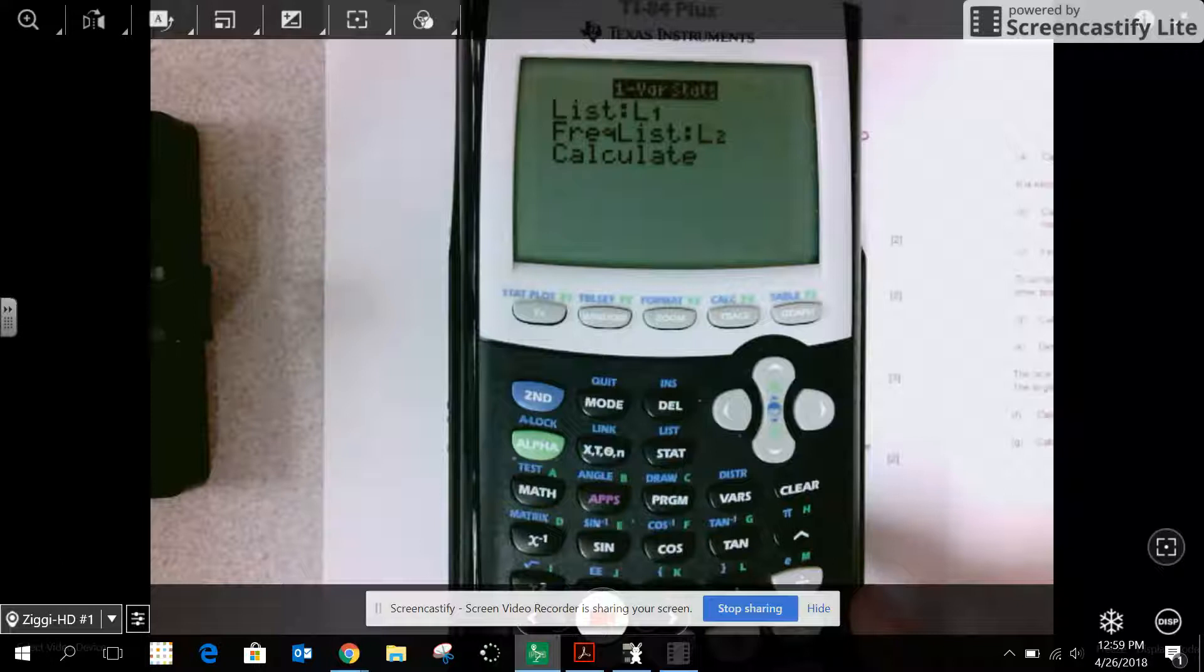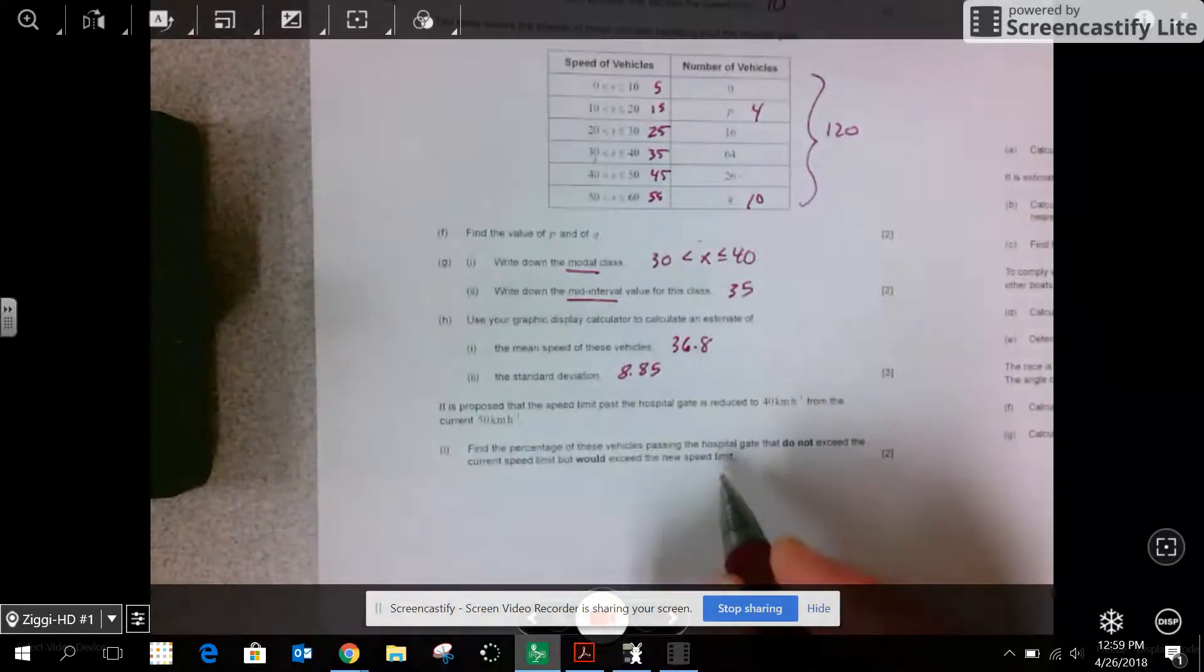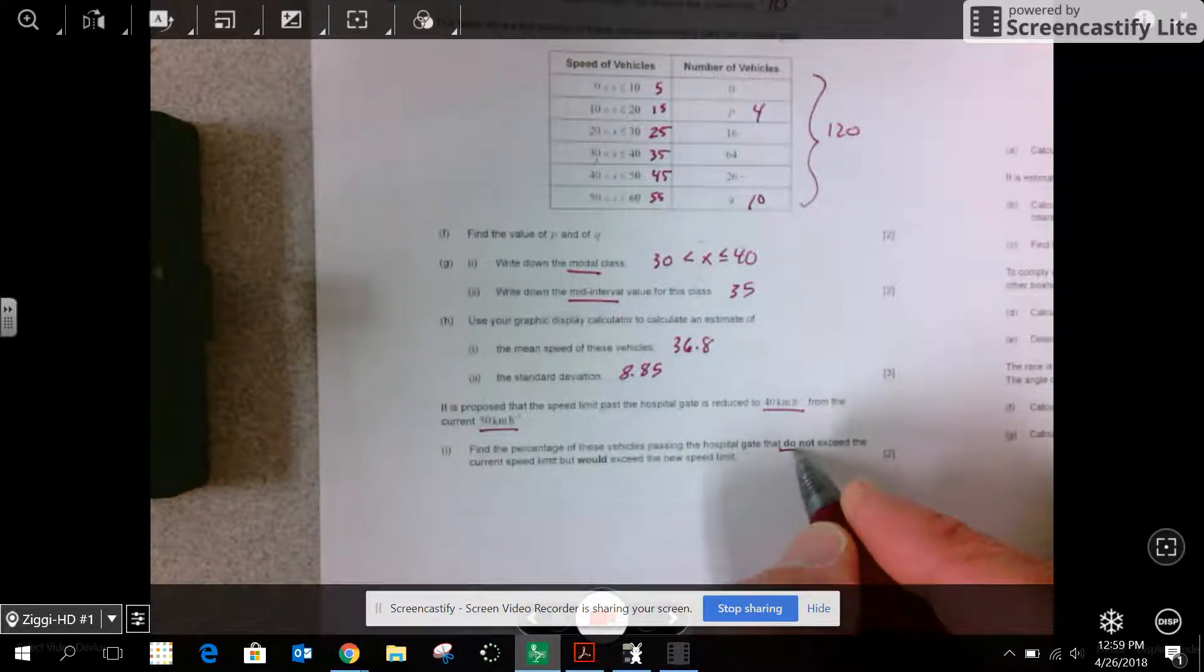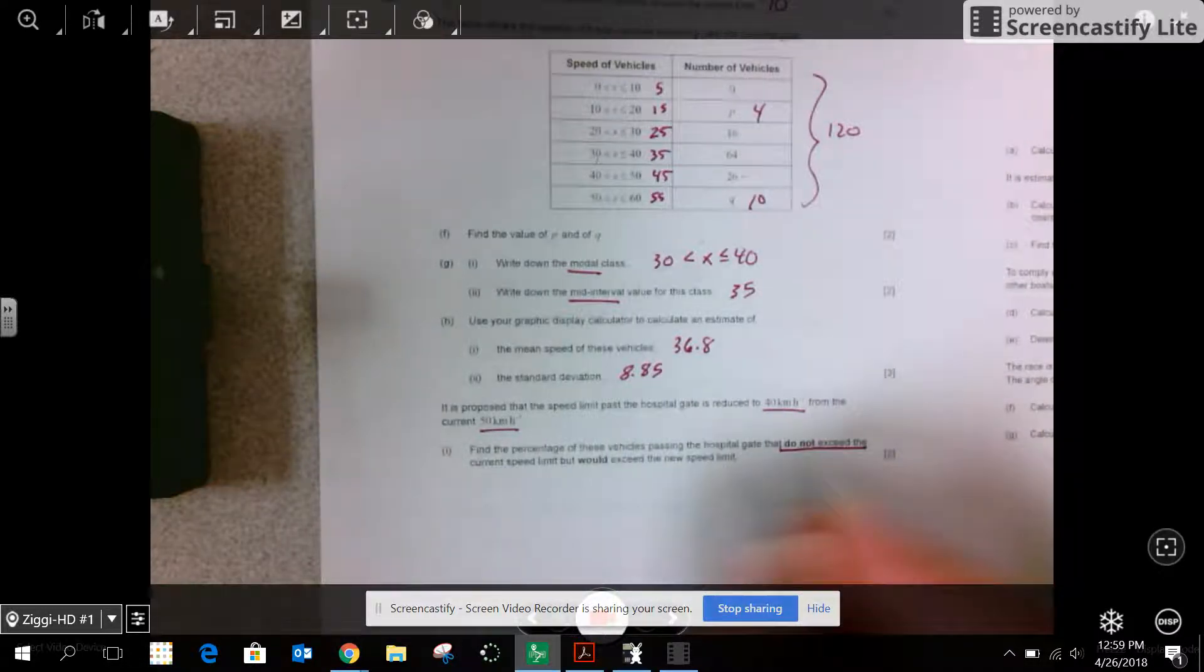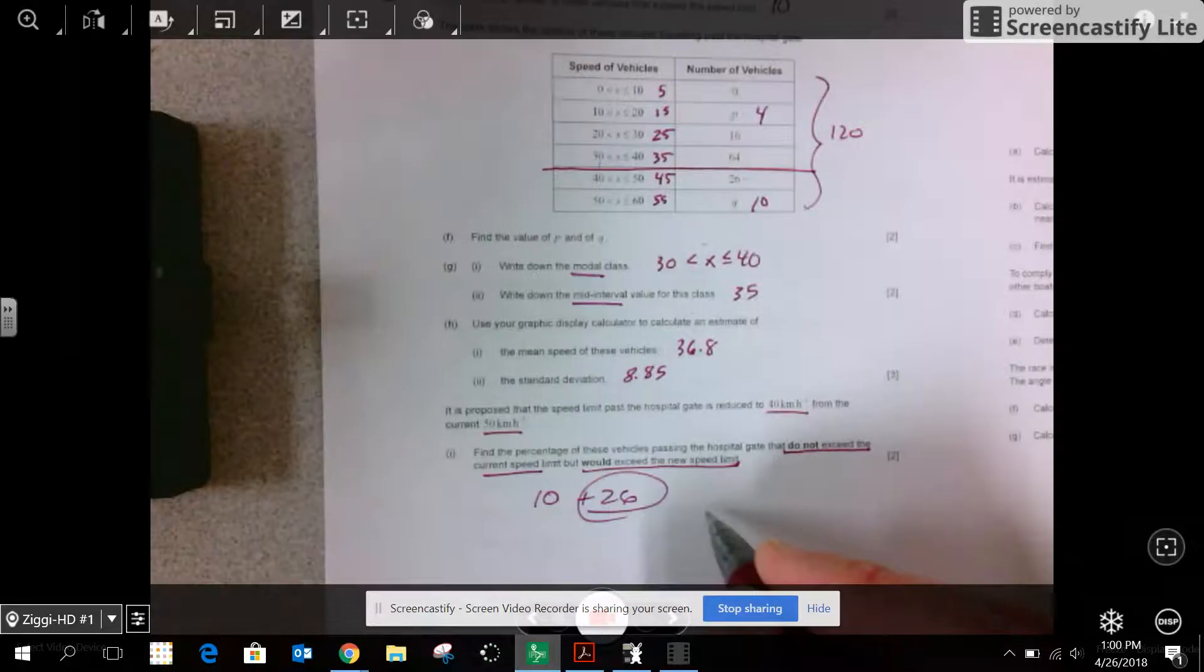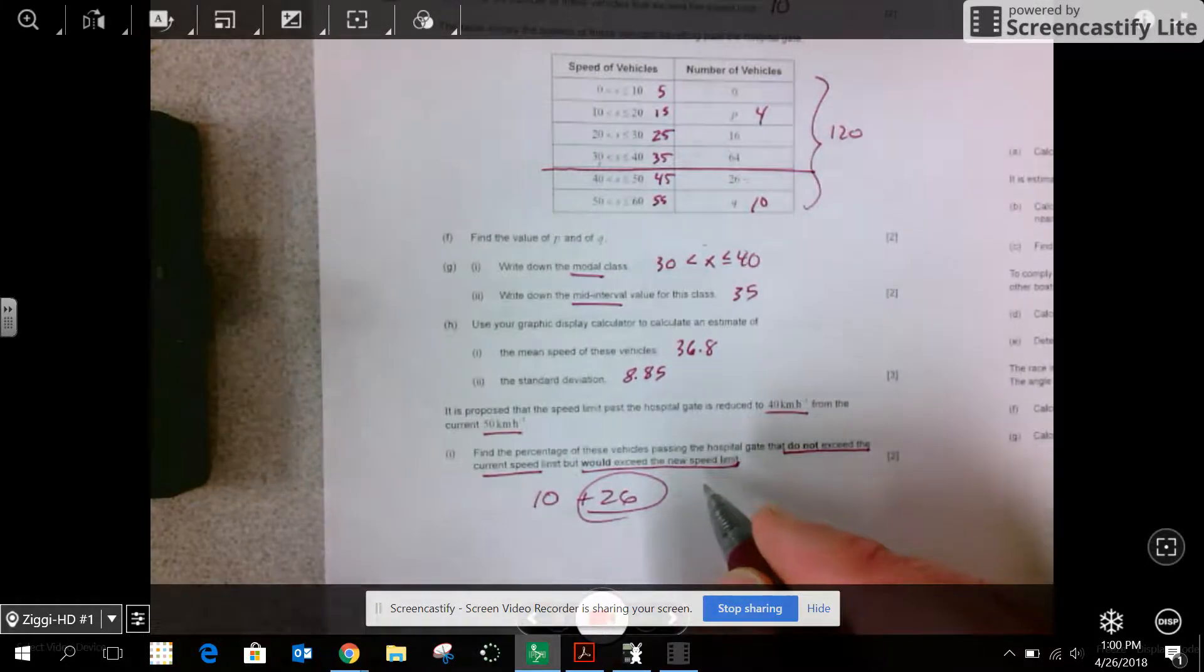It's proposed that the speed limit at the hospital is reduced to 40 from the current 50. Find the percentage of vehicles passing the hospital gate that do not exceed the speed limit currently, but would exceed this new speed limit. Okay. So currently, there are 10. But if we lowered the speed limit, now there would be 36. So I want to know the number of additional. There's 26 additional that would be included in that. So 26 out of 120. Change it to a percent. 21.7%.